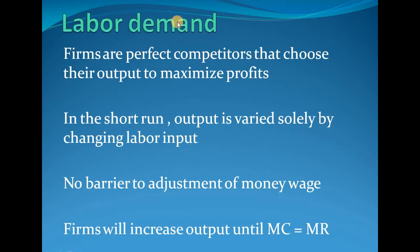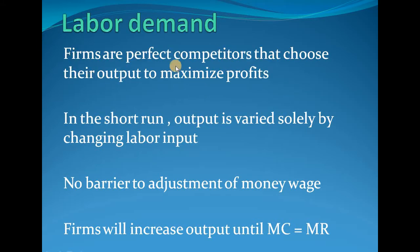Labor demand is the demand for labor used to produce output. There are certain assumptions we need to understand. First, firms are perfect competitors that choose their output to maximize profits. Even if firms are not perfect competitors, the profit maximization condition is valid for all market forms — monopoly, monopolistic competition, and so on. So the key assumptions are: firms are perfect competitors, and they choose output to maximize profit.